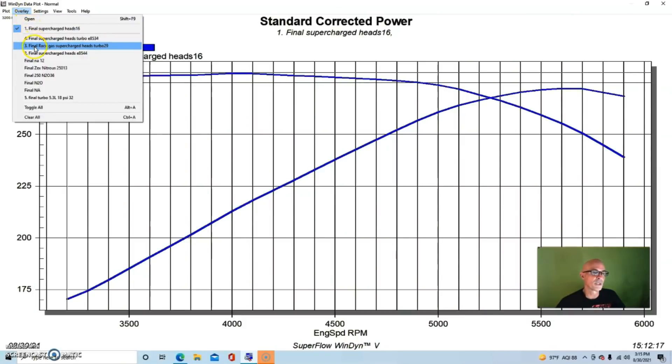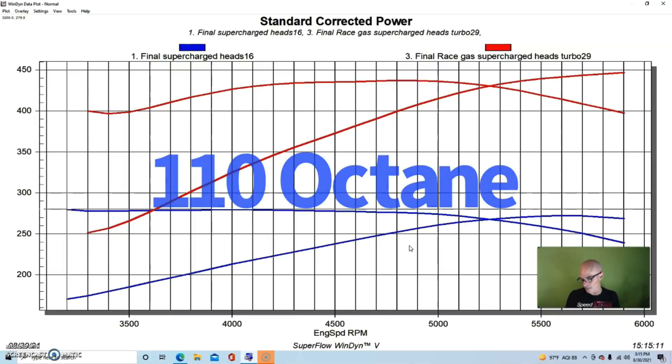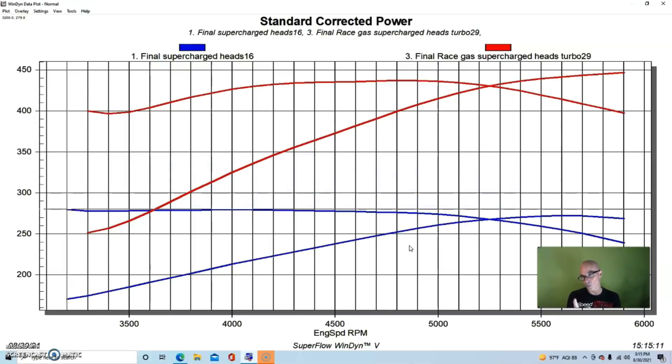Here's what happened when we installed the compound setup, adding seven pounds of boost from the turbo to our supercharged combination. Now again, it's important to note that this was run on, we did not run this combination on pump gas. The boost pressure is too high, it's way over 20 pounds on this combination and I decided to just start out with race gas. So we ran 110 octane race gas on this combination.